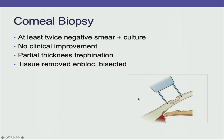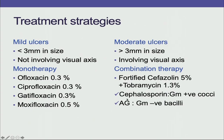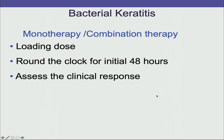For mild ulcers less than 3 mm not involving the visual axis, monotherapy with a fourth-generation fluoroquinolone such as gatifloxacin or moxifloxacin should be used. For moderate ulcers more than 3 mm involving the visual axis, combination therapy is used — fortified cefazoline 5% and tobramycin 1.3% to cover gram-positive cocci and gram-negative bacilli. For bacterial keratitis, a loading dose is given round the clock for 48 hours, then clinical response is assessed. Bacterial keratitis generally improves within 2–3 weeks, whereas fungal keratitis takes 3–4 weeks to respond.